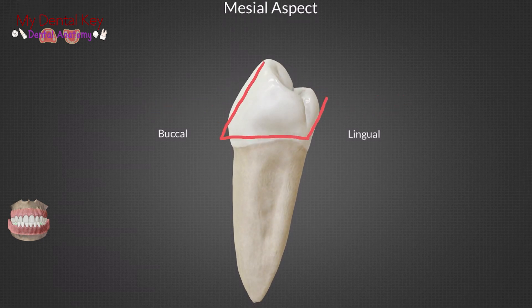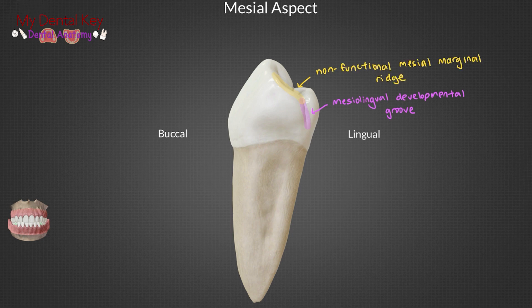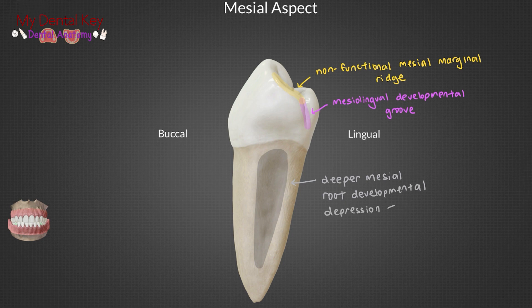From the mesial view, we can see that the tooth has a rhomboid shape to it. There is also a mesial lingual developmental groove that tracks to the lingual surface. The mesial marginal ridge is vertical and is the only marginal ridge deemed non-functional. There is no mesial or distal crown depression on this tooth. There is a deeper mesial root depression than the distal root depression.